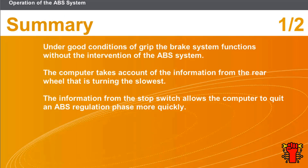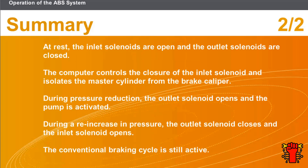In this section we covered the following points: under good conditions of grip, the brake system functions without the intervention of the ABS system. The computer takes account of the information from the rear wheel that is turning the slowest. The stop switch information allows the computer to quit an ABS regulation phase more quickly. At rest, the inlet solenoids are open and the outlet solenoids are closed. The computer controls the closure of the inlet solenoid and isolates the master cylinder from the brake caliper. During pressure reduction, the outlet solenoid opens and the pump is activated. During a re-increase in pressure, the outlet solenoid closes and the inlet solenoid opens. The conventional braking cycle is still active.